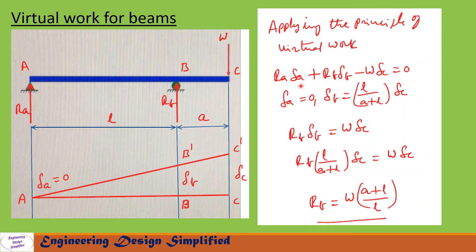In this equation, delta A equals zero and delta B equals L divided by (A plus L) into delta C, as derived previously. After substituting and simplifying, we ultimately get the reaction at B: Rb equals W into (A plus L) divided by L.